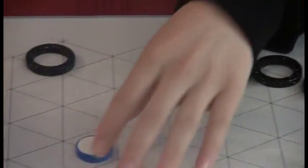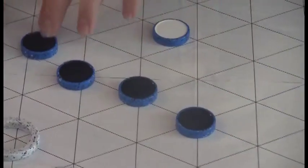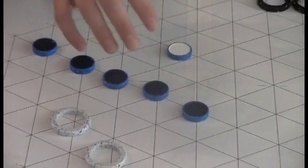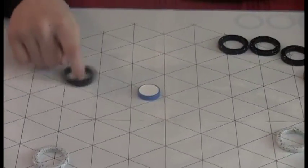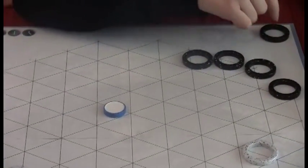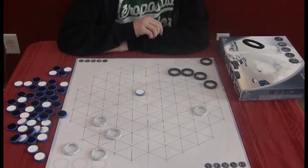You do that by getting five of these tiles of your color in a row. Once you have five in a row, those five are moved off the board, and you choose one of your rings to go off to the side. Wow. And then you're down a ring. Yeah. Cool. All right. Well, how do you get those five in a row?